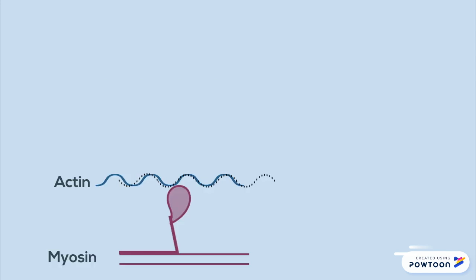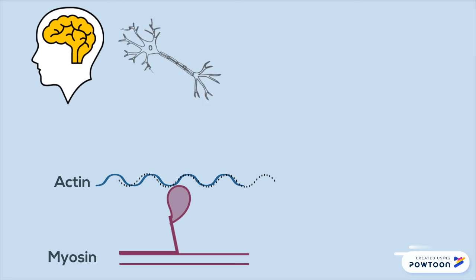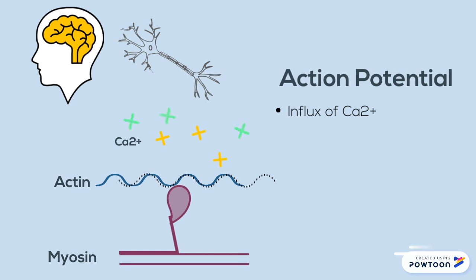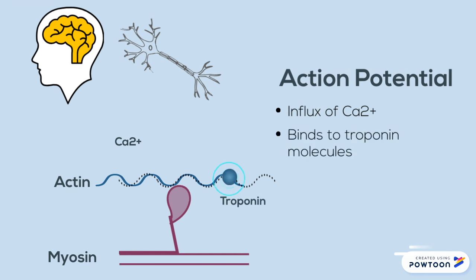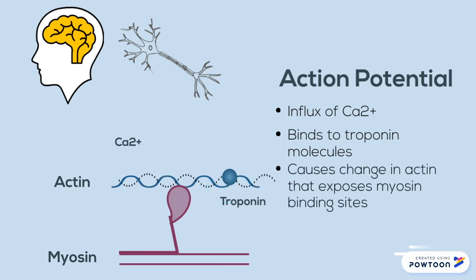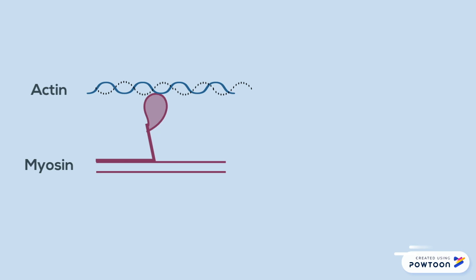Muscle contraction is initiated by the brain via an action potential. This action potential causes an influx of calcium ions that bind to troponin, a protein on the actin filament. This causes a conformational change in actin and exposes the myosin binding sites.